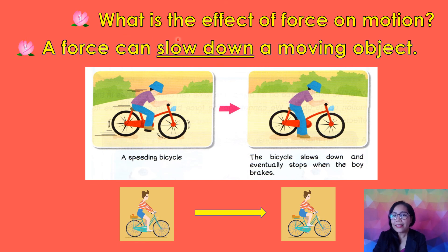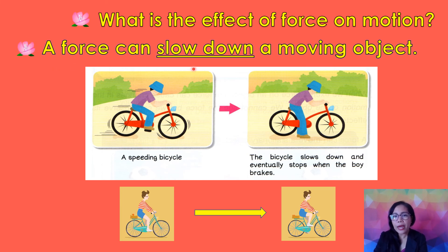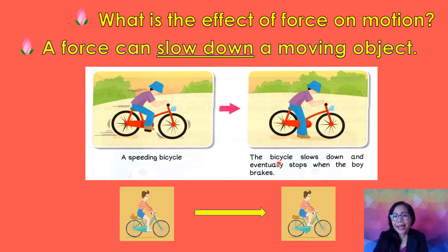What is the effect of force on motion? A force can slow down a moving object. This is a moving bicycle. When you apply brakes, the bicycle slows down and eventually stops.